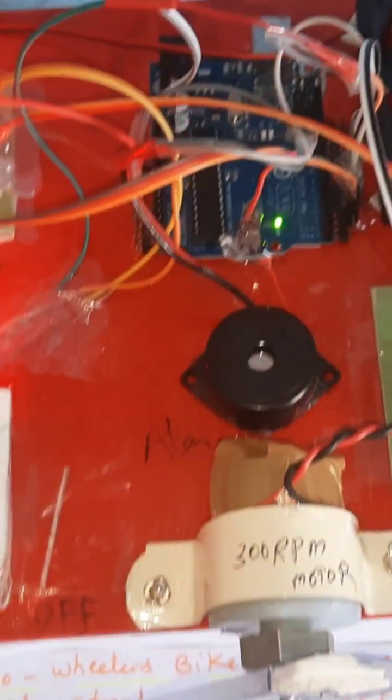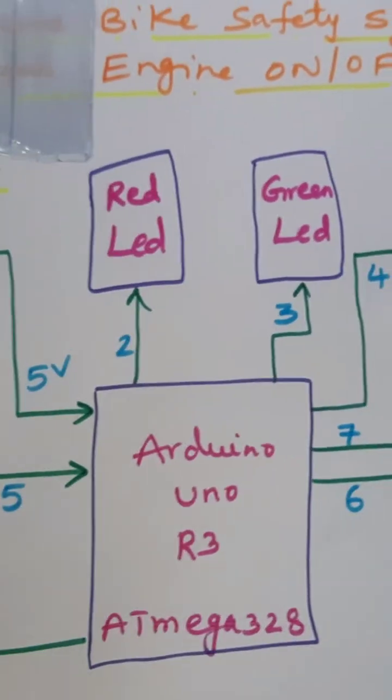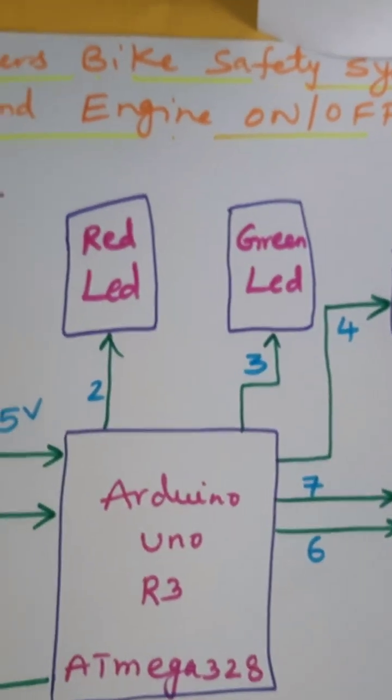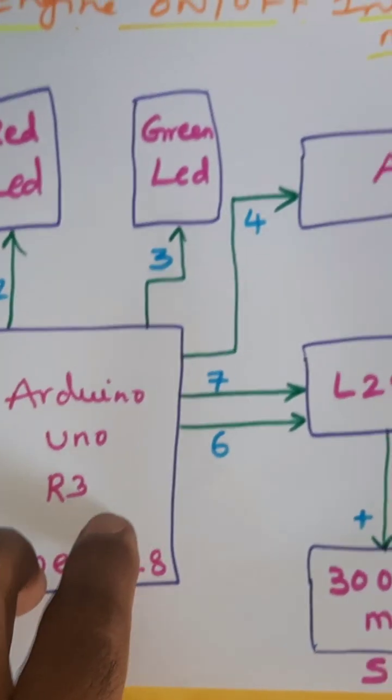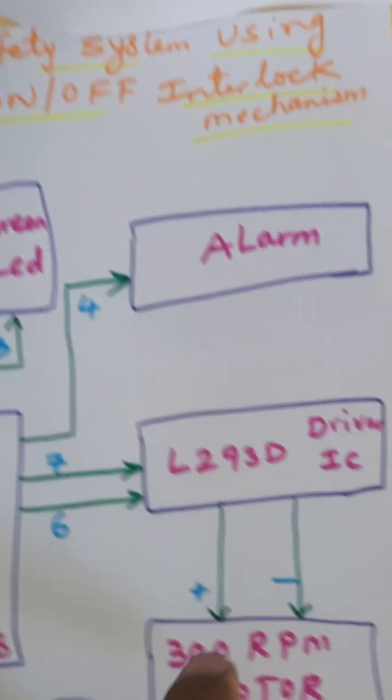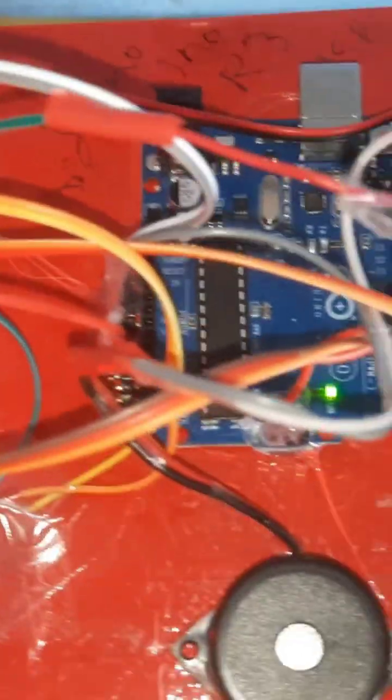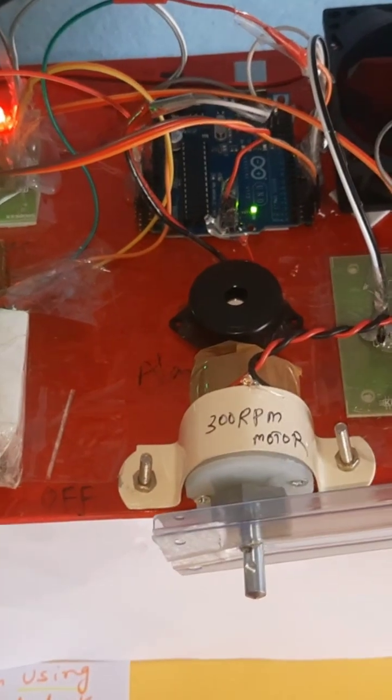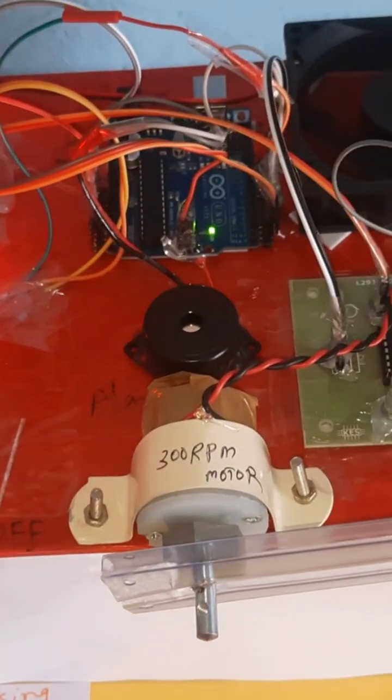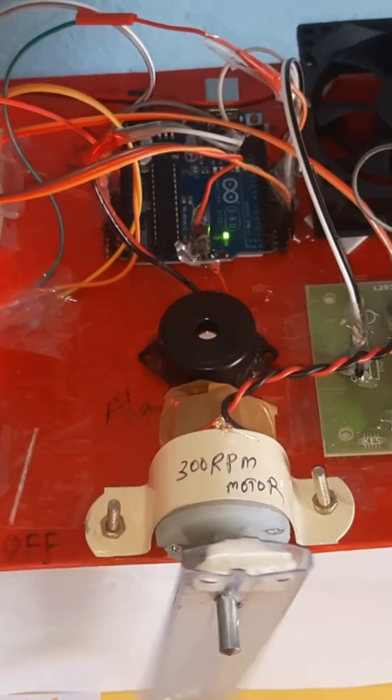Green LED on, engine off, stand goes down. So this is our total block diagram of the project. Power supply board, bike key engine, Arduino, red LED, green LED, alarm, engine motor, L293D driver, and side stand. When it's high, then off it goes down. Thank you.